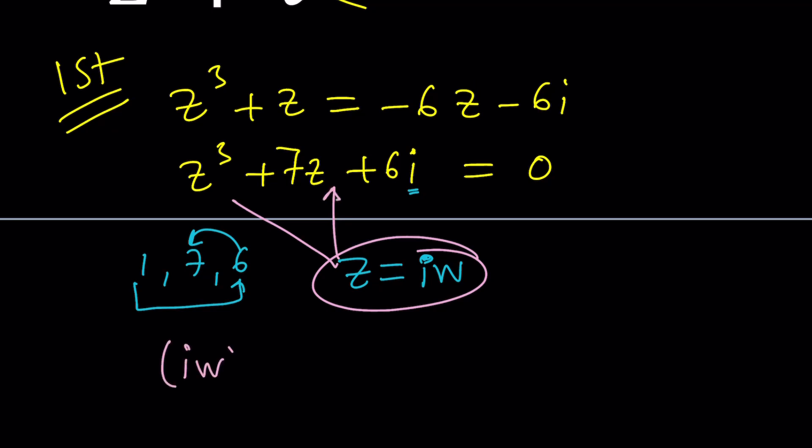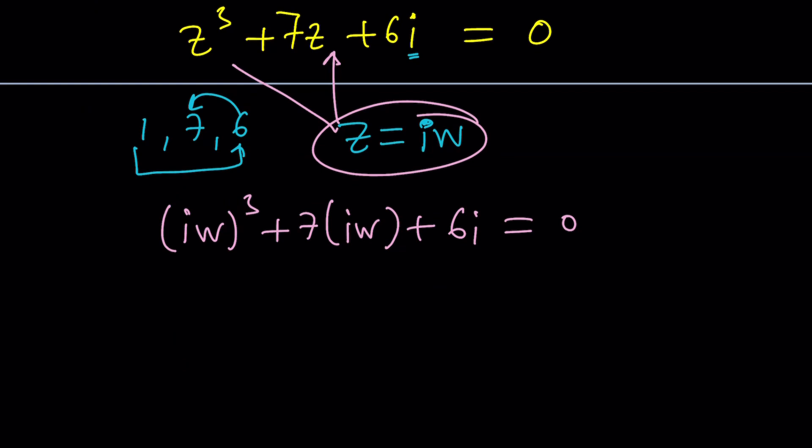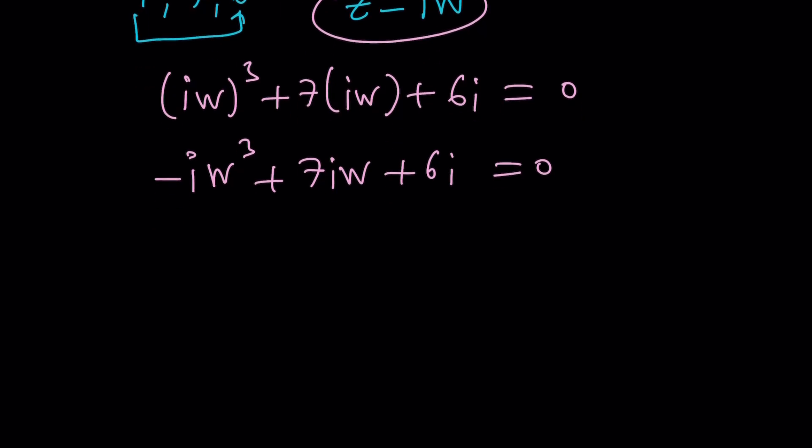IW to the third plus 7 times IW plus 6I equals 0. And I cubed is negative I, so that's going to give us negative I, W cubed plus 7IW plus 6I equals 0. And one thing that we can do here that's going to be very helpful is taking out negative I.